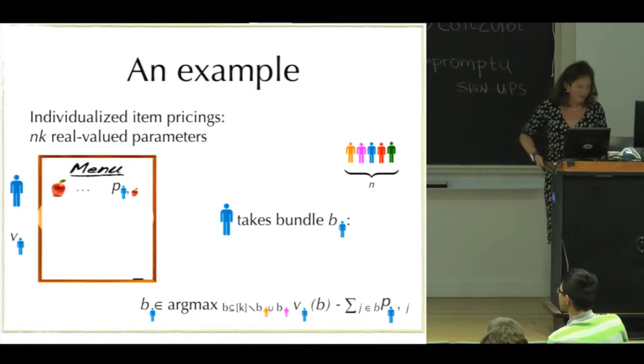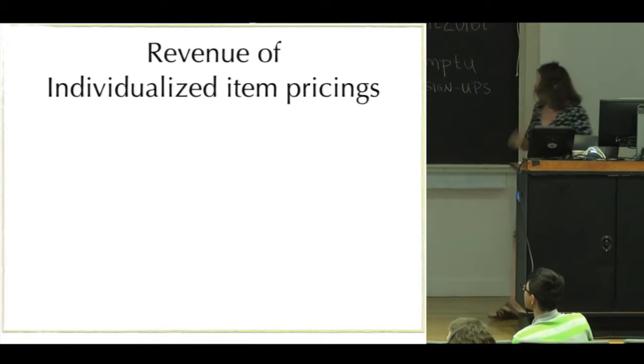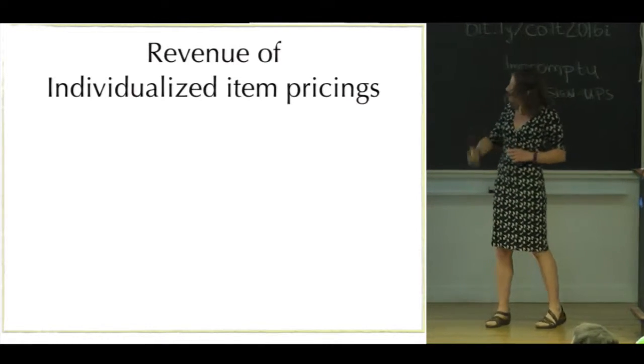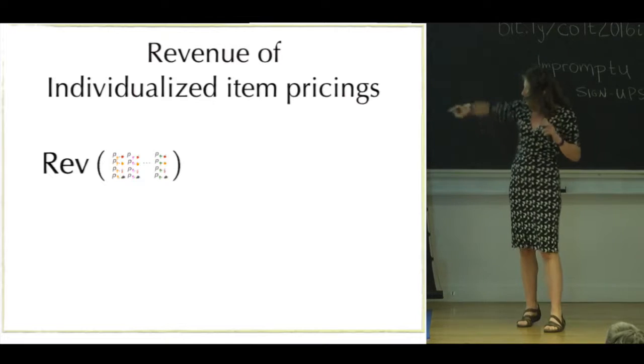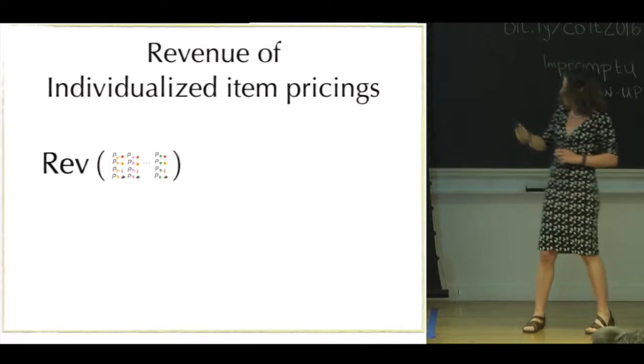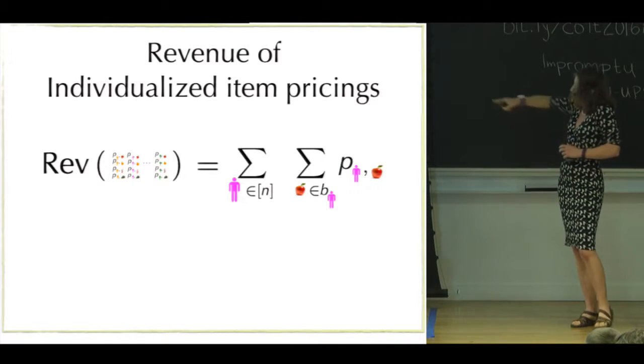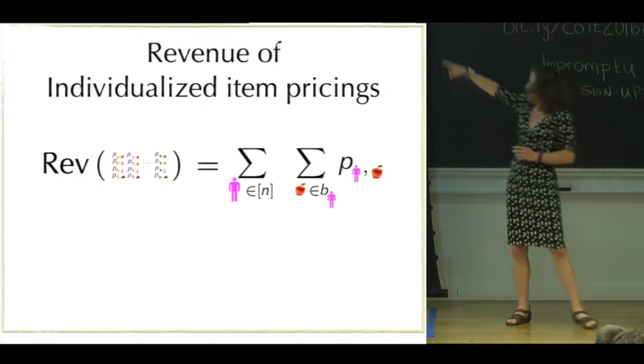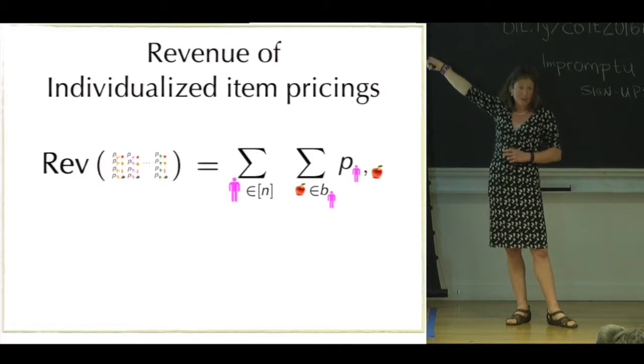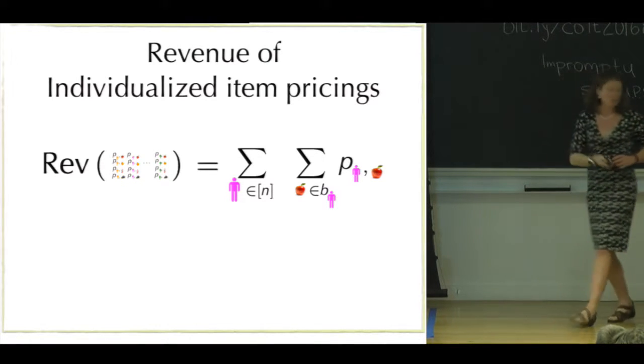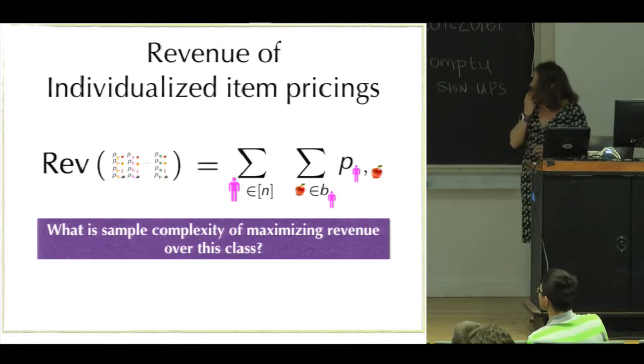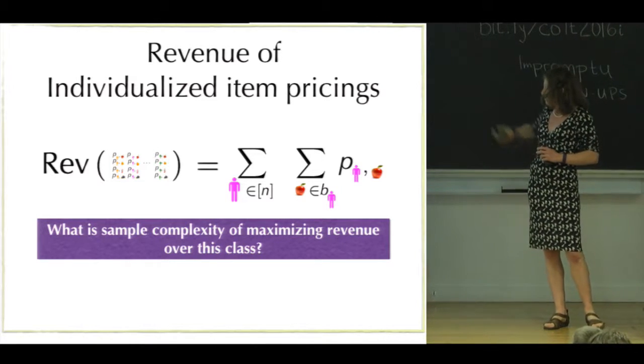The revenue of a set of individualized item pricing is just the sum over people of the prices that they paid for the items that they bought. So, slightly more formally, we could ask what the sample complexity of maximizing revenue over this class would be.